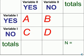Cell A would have those subjects who have both variable 1 and variable 2. Cell B would have variable 1's condition but not variable 2. Cell C would have variable 2's condition but not variable 1. And cell D would have neither.